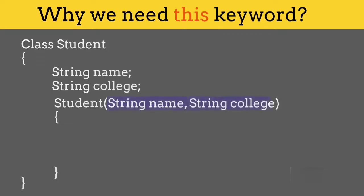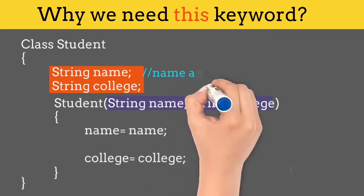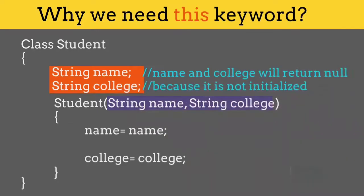Now you can see that the name of our local parameters and our class variables is the same. So if we try to update the class parameters like name equals name and college equals college, then Java will update the local parameter, not the class variables. So when you try to access name and college in some other function in Java, Java will return a null value.